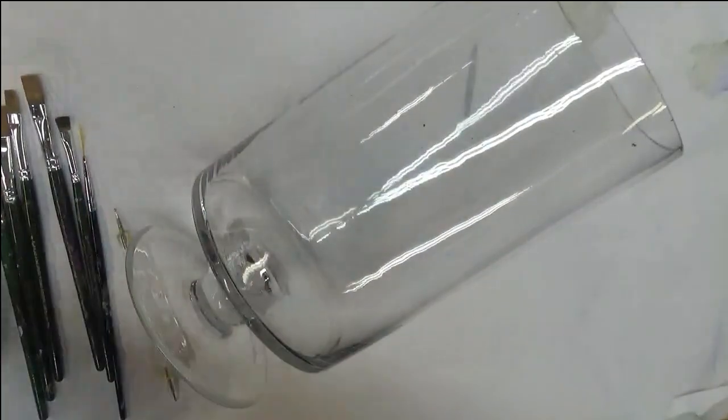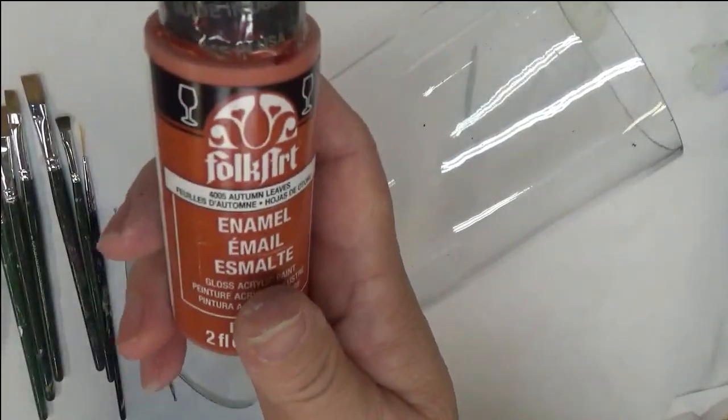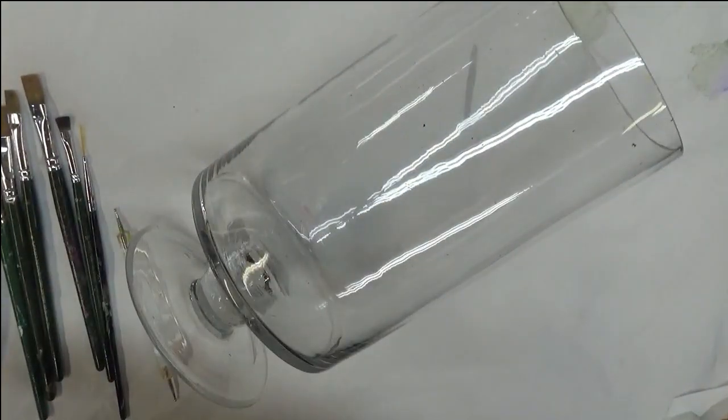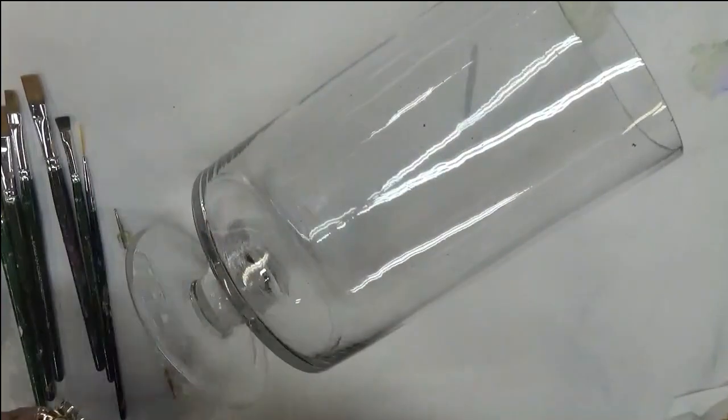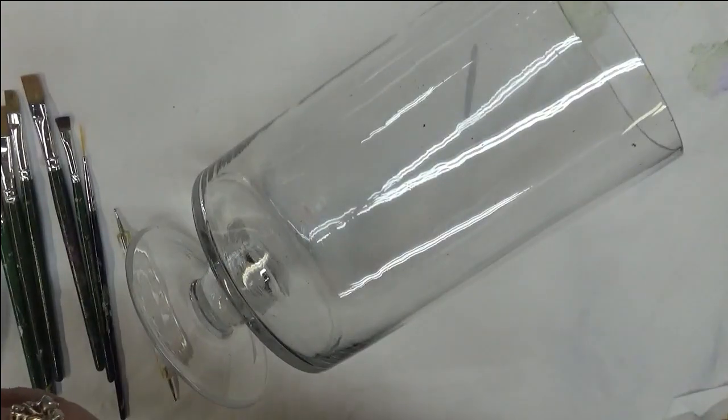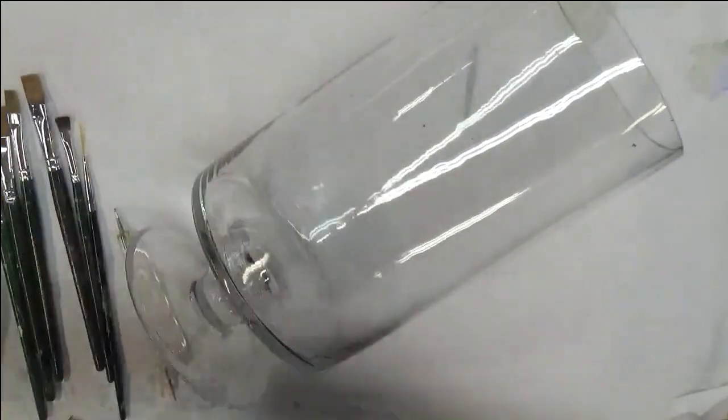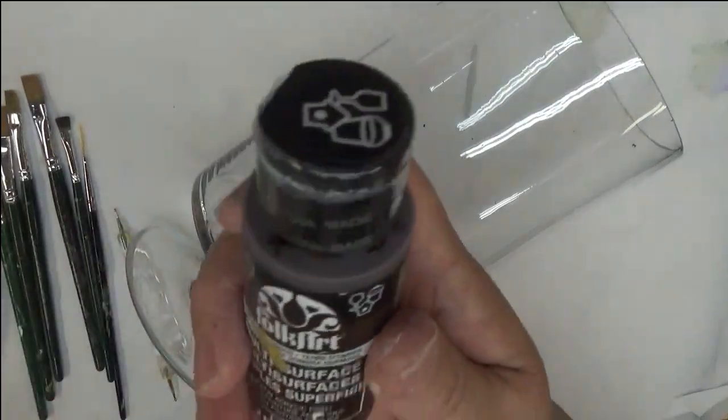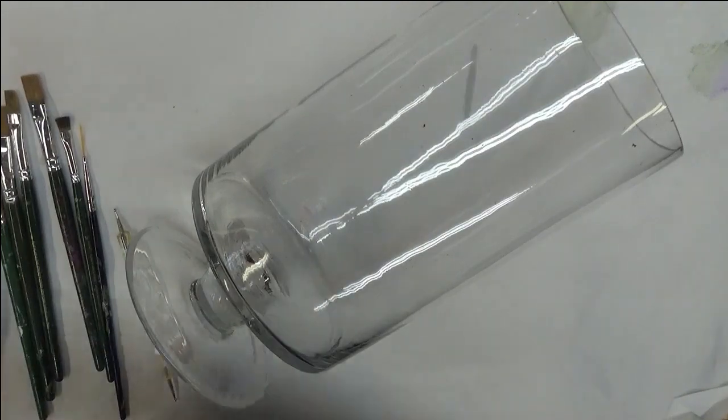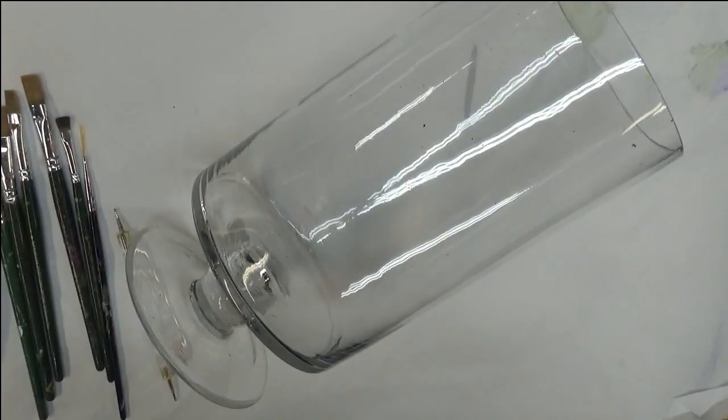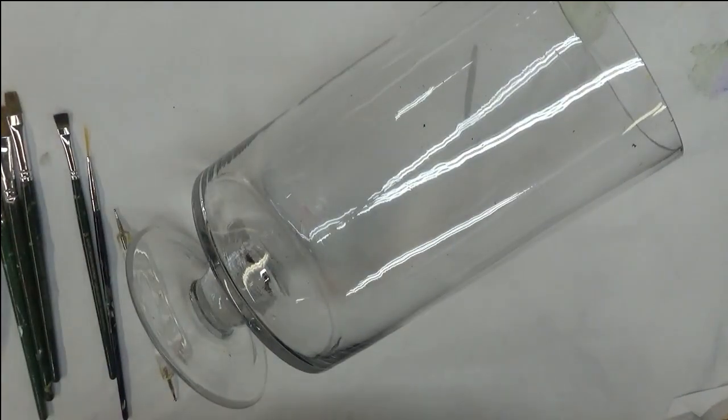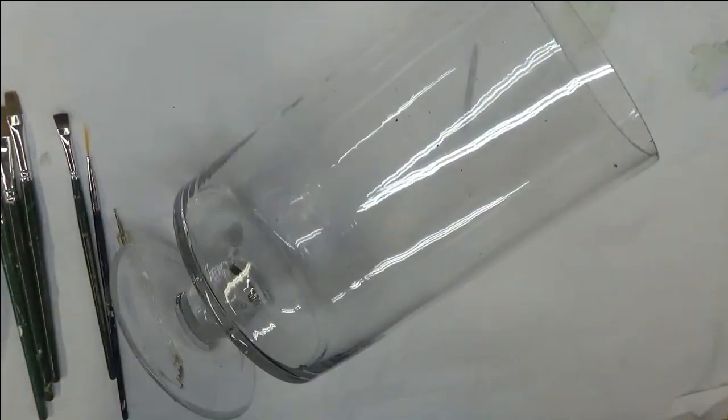Colors I'm using, I'm using a variety of colors here. I'm using Vivid Orange, Autumn Leaves, Pure Orange, Wicker White, Happy Green, Moon Yellow, a little bit of Burnt Umber, and Thicket. I think I got them all.